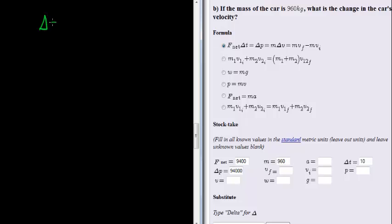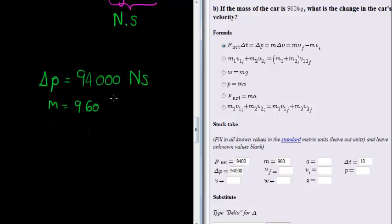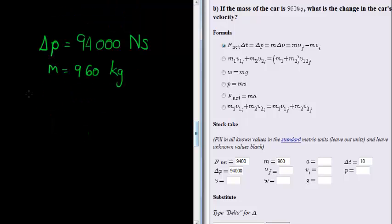So the impulse we worked out in the previous question was equal to, let's go have a peak, 94000 newton seconds. And the mass of the car is now given as 960 kilograms, and our formula is a very simple change in momentum is equal to mass times change in velocity.